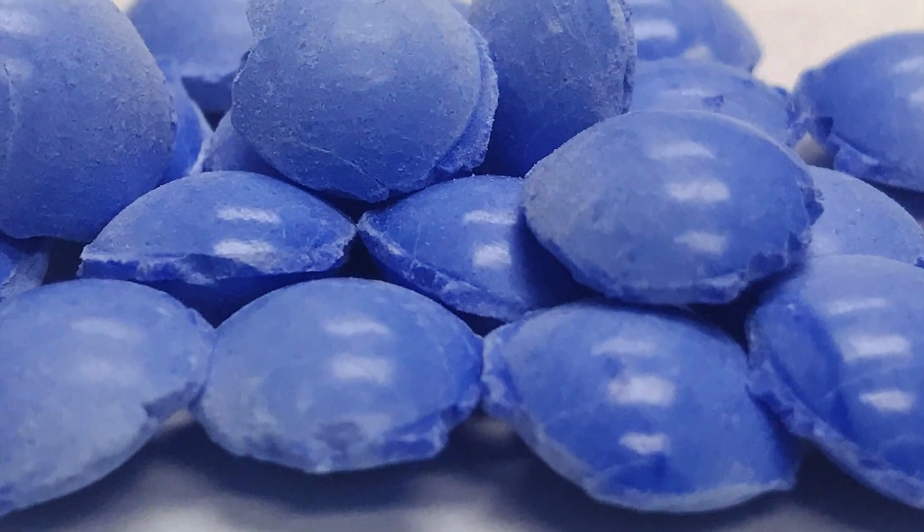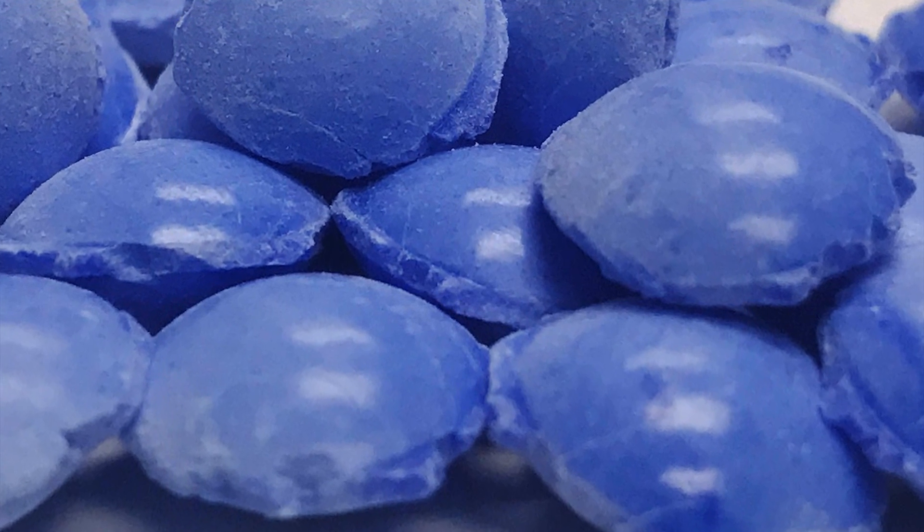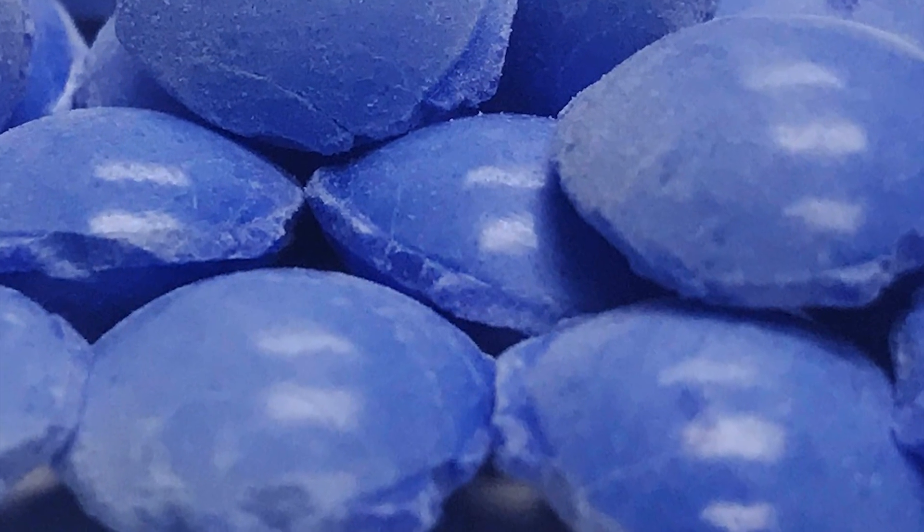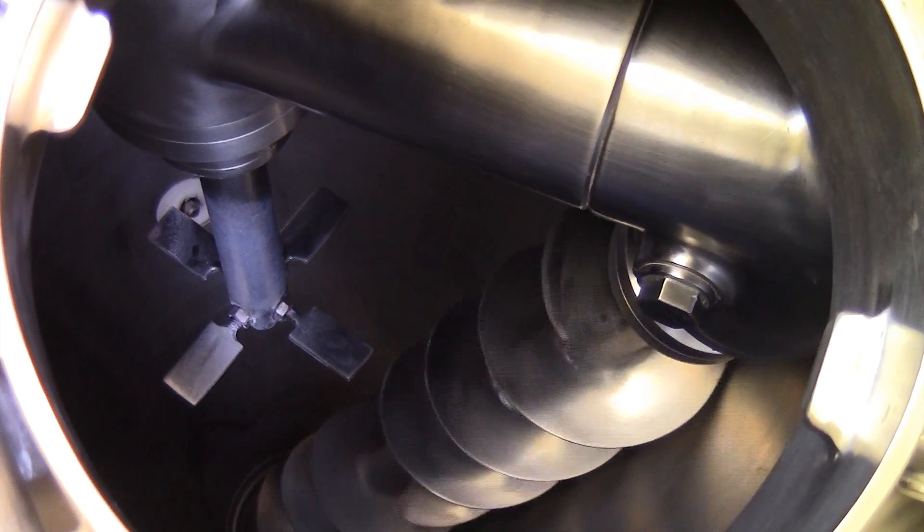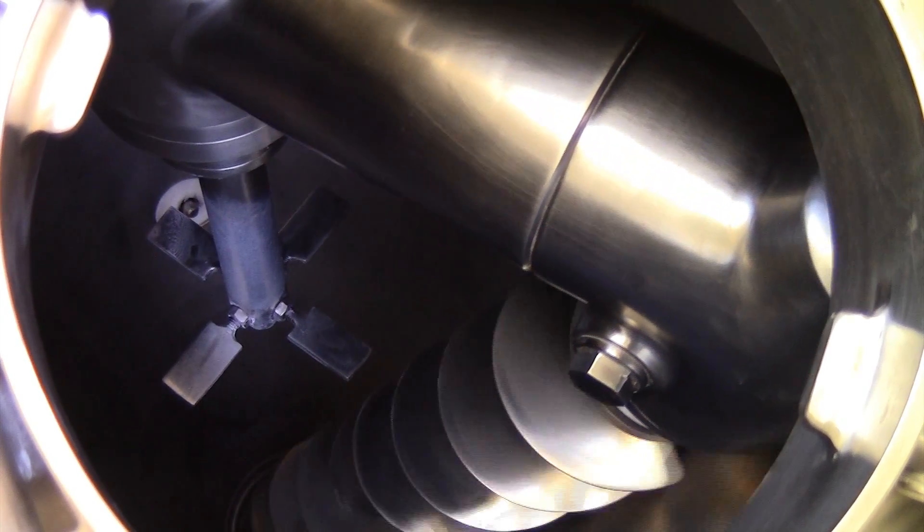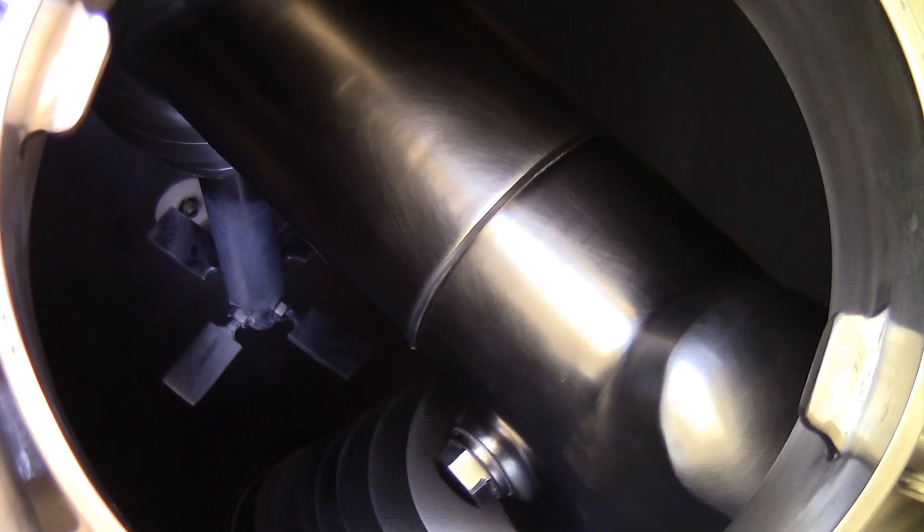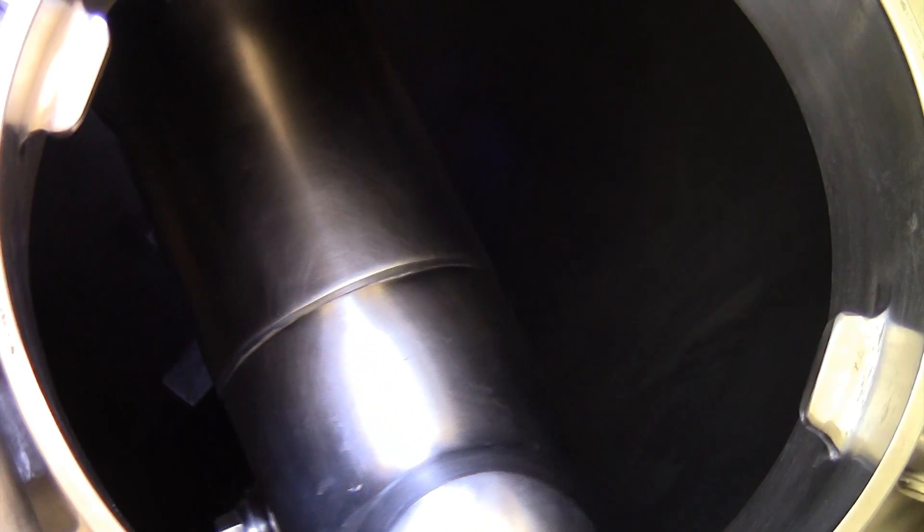In this application, the customer requires uniform, smooth briquettes. A Frico Nauta conical screw mixer can separate the briquettes and help round off sharp edges on the briquettes, which is also known as liberring.